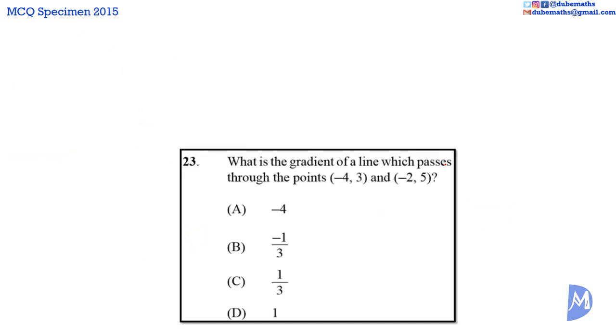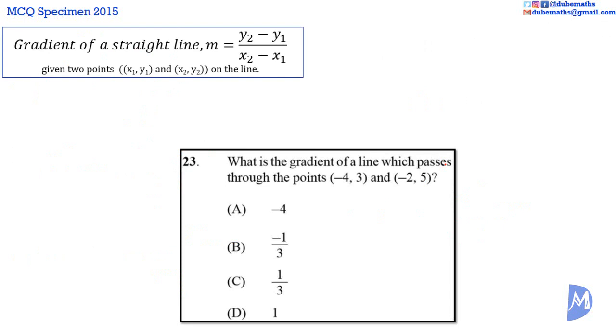Question 23. The gradient of a straight line is defined as m = (y₂ - y₁)/(x₂ - x₁) given two points (x₁, y₁) and (x₂, y₂). Therefore, the gradient of this line is m = (5 - 3)/(-2 - (-4)). 5 minus 3 equals 2, and -2 subtract -4...